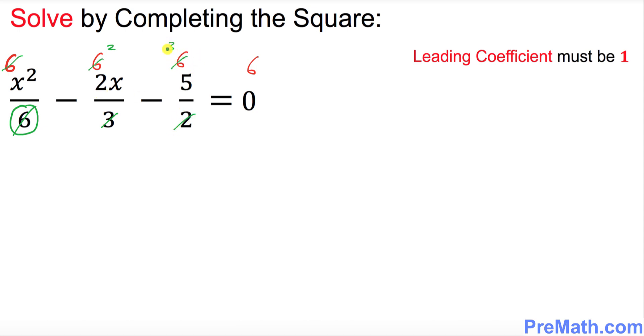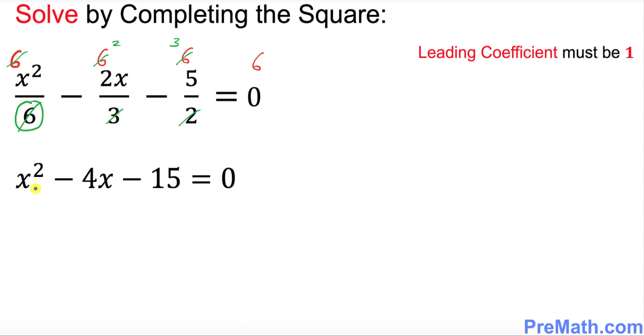This 3 goes into 6 twice, 2 times 2 makes 4. And 2 goes into 6 three times, 3 times 5 is 15. Our simplified quadratic equation turns out to be x² - 4x - 15 = 0.